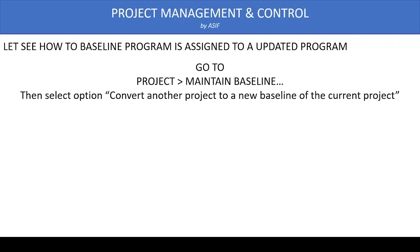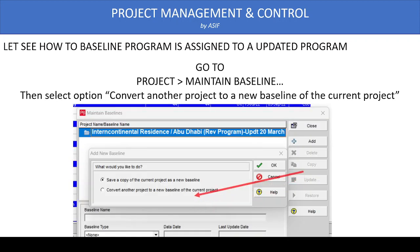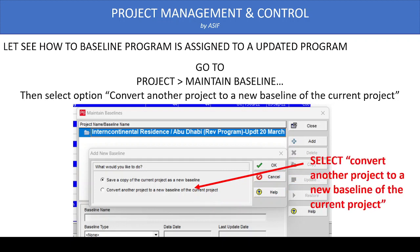In Primavera, assigning the baseline is very simple. We open the updated program and go to the Project option, where there is a 'Maintain Baseline' option. When we click Maintain Baseline, two options appear: 'Save a copy of the current project' and 'Convert another project.' The 'Save a copy' option is used sometimes to save your original work — for example, if you are going to experiment or do a what-if analysis, you can make a copy of the program stored inside as a baseline.